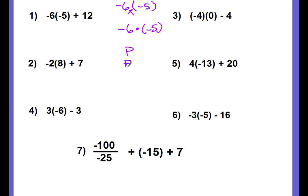I'm going to write down my PEMDAS, and you should do that as well. Now, parentheses: it looks like the negative 5 is inside parentheses, but parentheses should have an operation inside. There's no operation here — this is just one of those parentheses telling us it's negative. So this means multiply and addition. There are no parentheses or exponents. We do have multiplication: negative 6 times negative 5. A negative times a negative is a positive 30. Bring down the plus 12, and the last operation is to add: 30 plus 12 is 42.